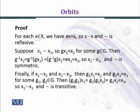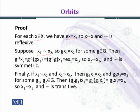Now we will show that the symmetric property is satisfied. We are given that x relates to y if and only if g·x equals y. Suppose that x₁ relates to x₂, and we will prove that x₂ relates to x₁. If x₁ relates to x₂, then by definition g·x₁ equals x₂ for some g belonging to G, where G is a group.